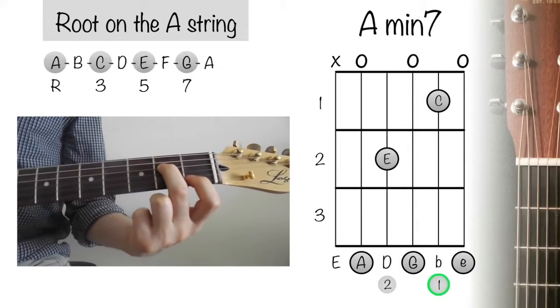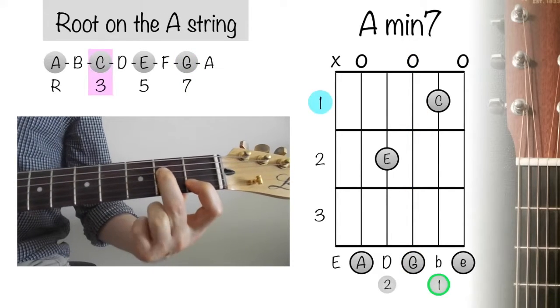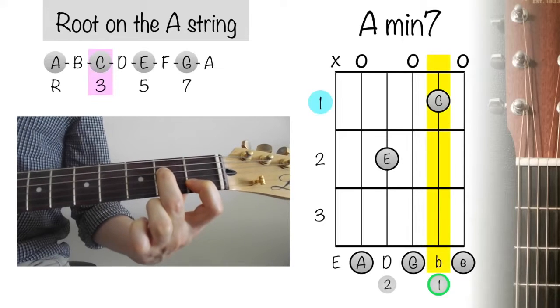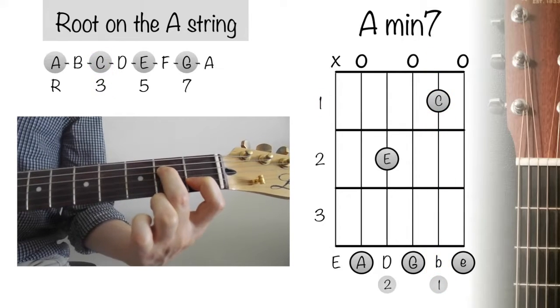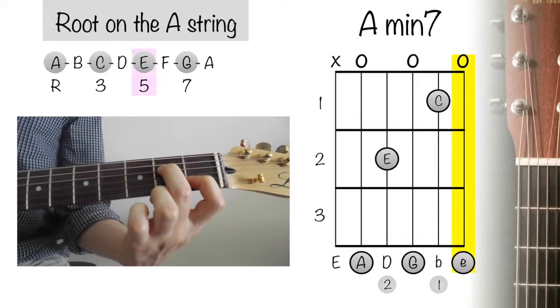Finger 1 or your index finger plays the note C on the 1st fret of the B string. Leave string 1 open as well to play a double of the note E.